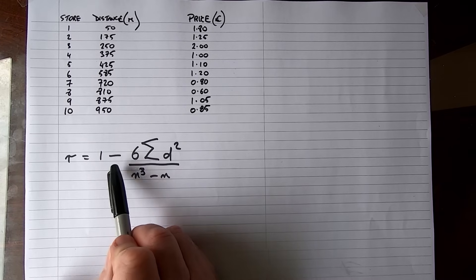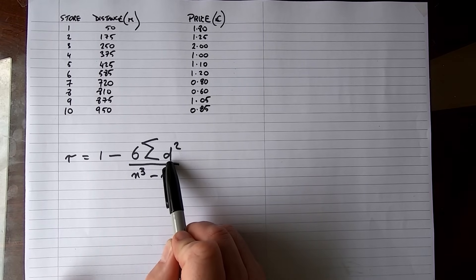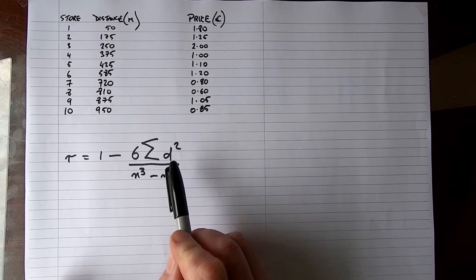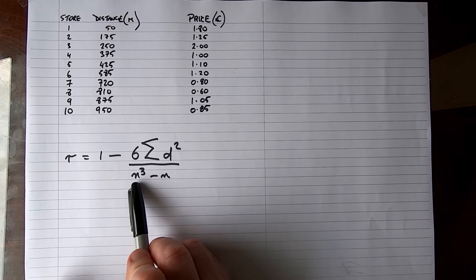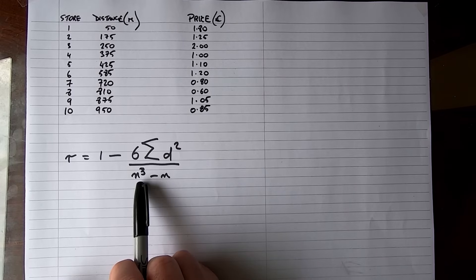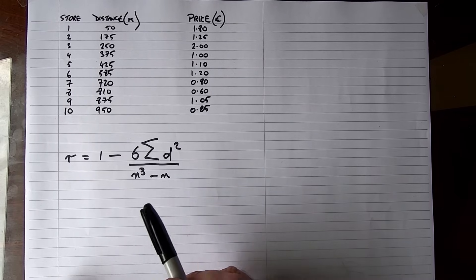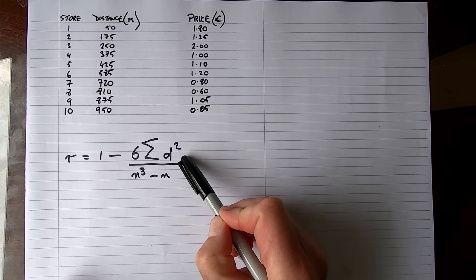It's going to be equal to 1 minus 6 times the sum of d squared. Now we don't know what d squared is yet—it's going to represent the differences, but we need to calculate that value d so that we can square it. This is divided by n cubed minus n. In our case, n is 10, we have 10 stores, so n is going to be 10 cubed minus 10. So the only bit that we're really interested in finding out first is what the value of d squared is.